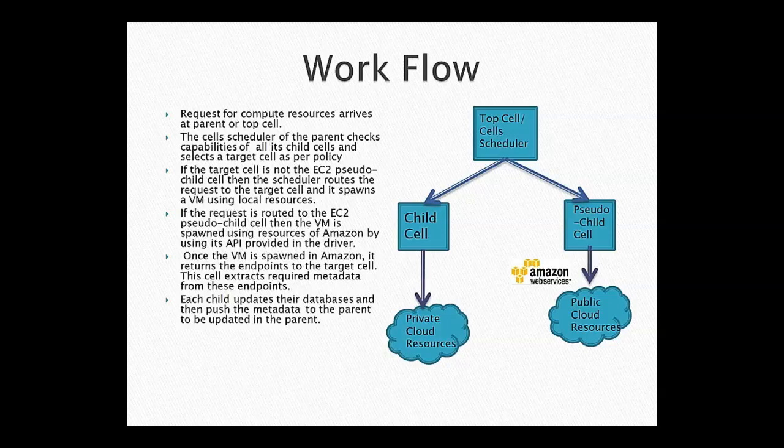If it decides to create the VM in the regular child cell representing the local OpenStack, then the flow is as it normally is: it goes to the child cell, which selects the physical server, then calls the Nova compute agent and creates the VMs. On the other hand, if it selects the pseudo-child cell representing Amazon, the request is sent to the pseudo-child cell, which uses the Amazon drivers to create the VM in Amazon. Once it creates the VM in Amazon, part of the pseudo-child cell API is to return the endpoints to the parent cells so you can talk to the VM.